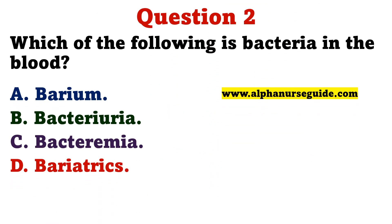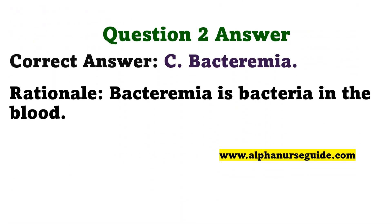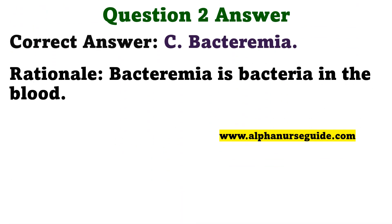Which of the following is bacteria in the blood? A: Barium. B: Bacteriuria. C: Bacteremia. D: Bariatrics. The correct answer is C, Bacteremia. Bacteremia is bacteria in the blood.